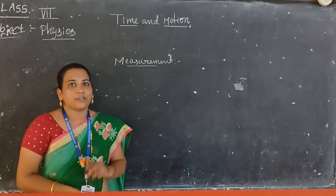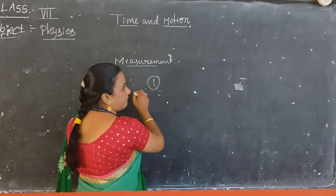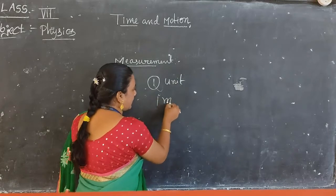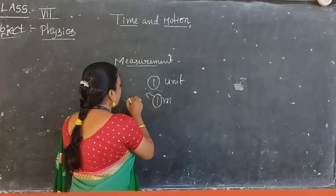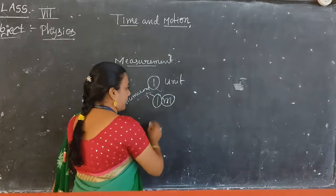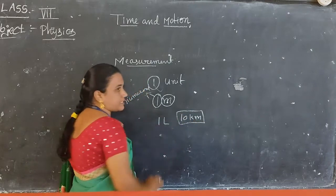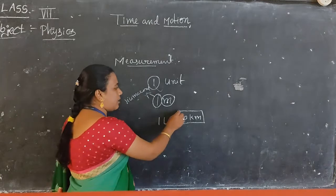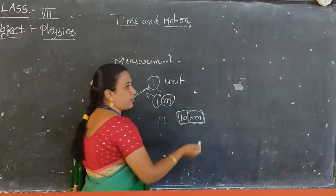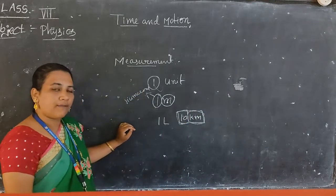In these physical quantities, two important things we need to understand. One is the numerical value and the second one is the unit. For example, if you take one meter — one is the numerical value. So the numerical value is important along with the unit. Both the numerical value and its unit are very important to know a physical quantity.